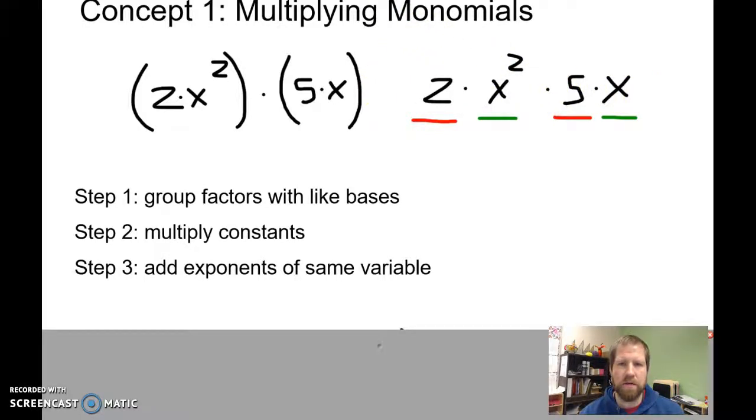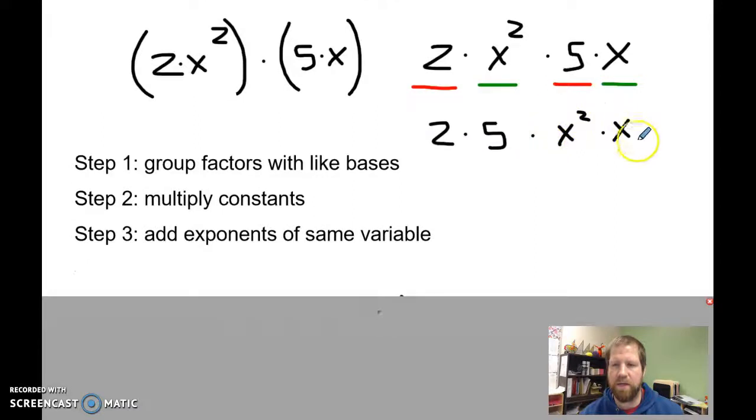So I'm going to rewrite those so they are next to each other. I've got 2 times 5, and then I've got x squared times x. I've got my same bases together, and you can put parentheses around those if you want, just so you know you're kind of going to do those a little separately.